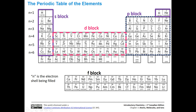The p block is where we're filling the p orbitals. For instance, for carbon we would have 1s2, 2s2, 2p2 — one, two electrons there. You can kind of see how you can count that — it makes it really easy to write electron configurations using the periodic table this way.